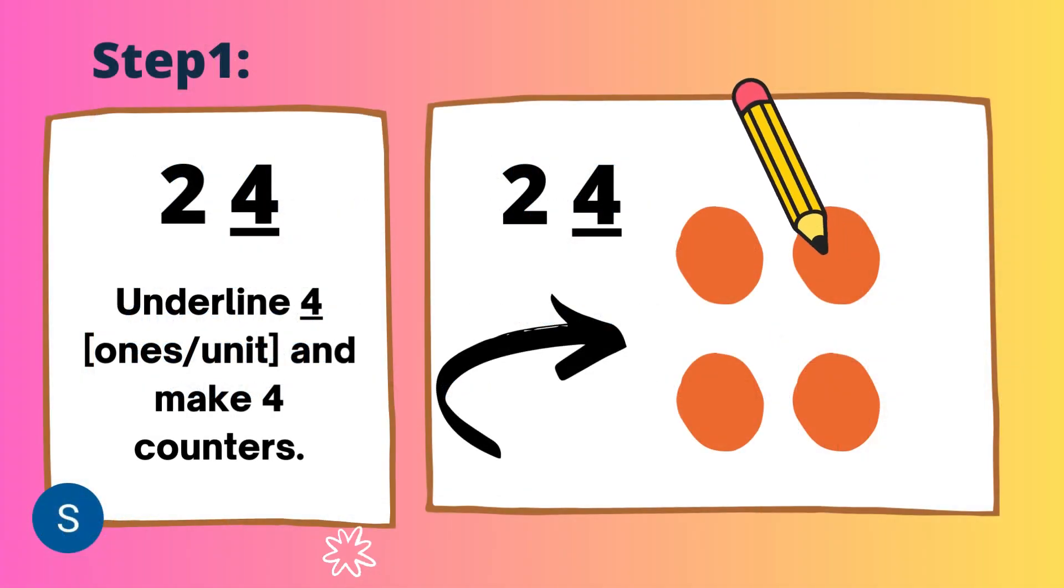Step 1: First, underline the number that represents ones or units and make counters. You can see we have number 24, and 4 is underlined because it is the unit number. And we have made 4 counters.